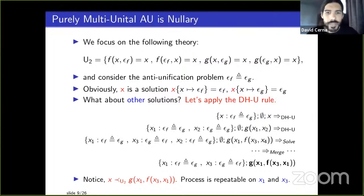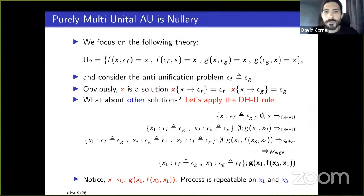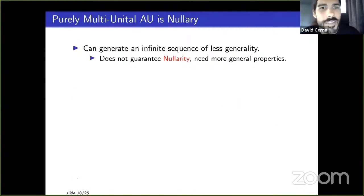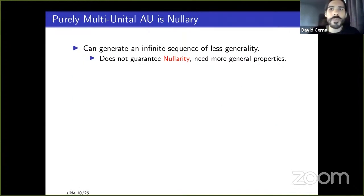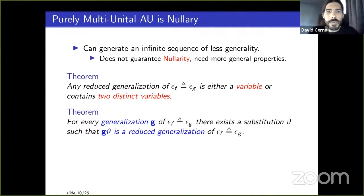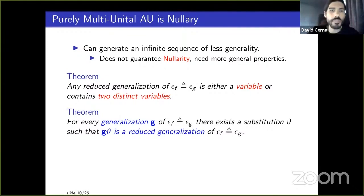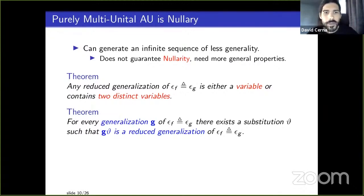An infinite sequence doesn't guarantee nullarity on its own. We need more properties. From the paper: the first theorem says every generalization is either a variable or contains exactly two distinct variables (with possible multiple occurrences). Any generalization can be transformed into this form using a substitution. This leads to the concept of a reduced generalization.